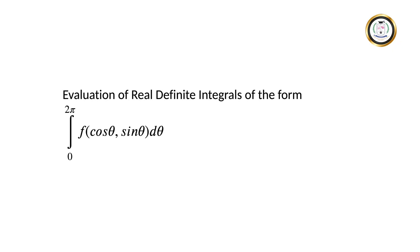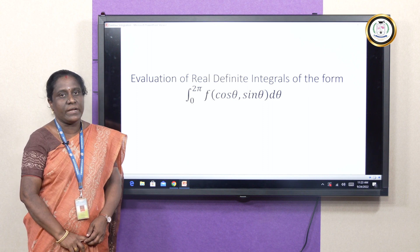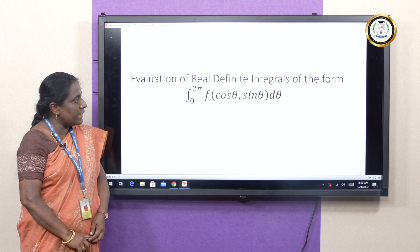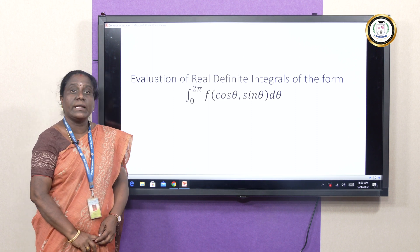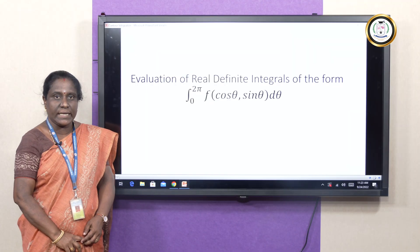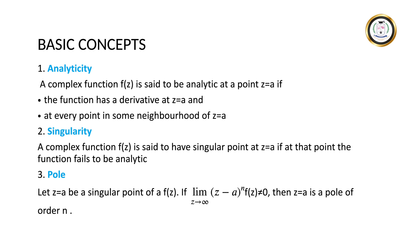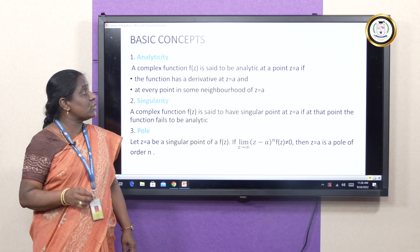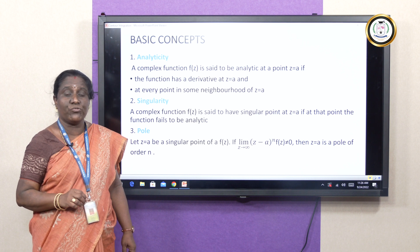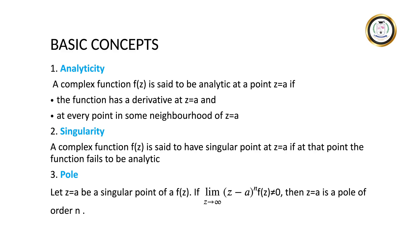Now we will come to the main theme of this lecture: the evaluation of certain types of real definite integrals. For a particular case, the pattern is of the form integral 0 to 2π of a function of cos θ and sin θ with respect to the variable θ. To solve this integral, we need some basic concepts in complex analysis, which we will look into now.